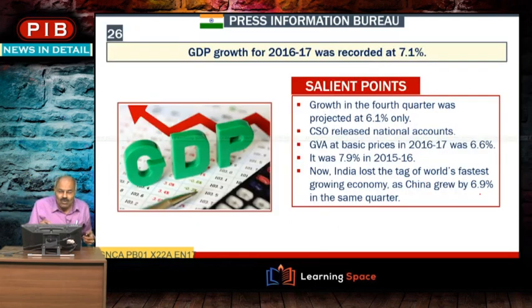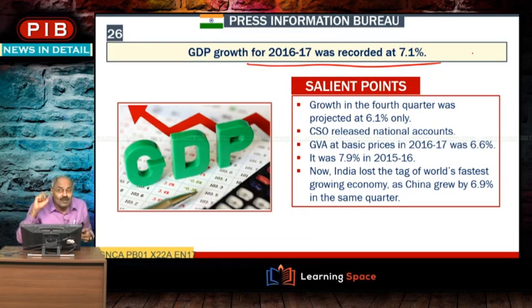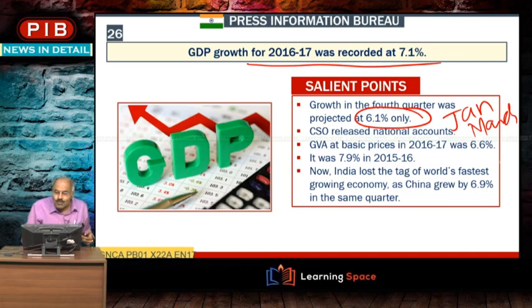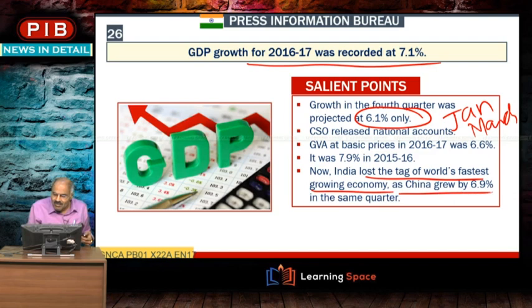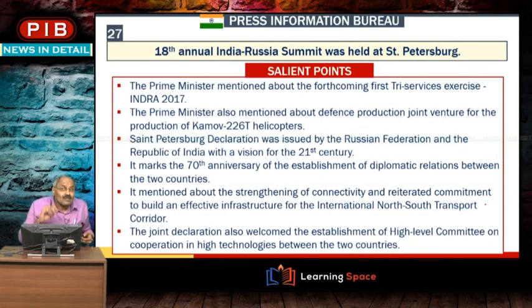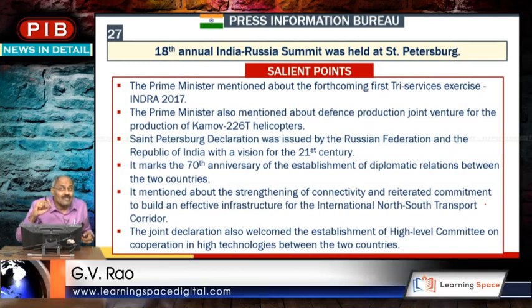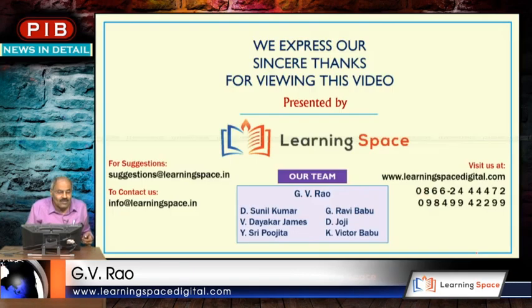GDP growth for 2016-17 was recorded at 7.1%, but growth in the fourth quarter (January to March) was just 6.1%. India lost the tag of world's fastest growing economy as China grew by 6.9% in the same quarter. The 18th Annual India-Russia Summit was held in St. Petersburg.